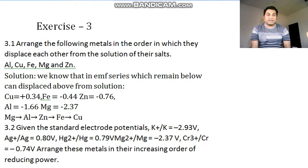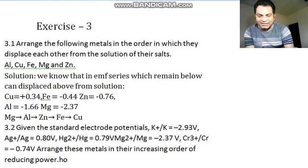You can see that standard electron potential of K/K+ is given -2.93 volt, Ag is 0.8, mercury is 0.74, magnesium is -2.37, and Cr3+/Cr is -0.74V. Arrange these metals in their increasing order of reducing power. Now this is your homework.